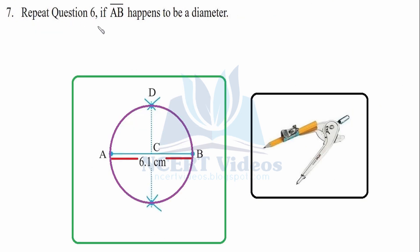Question 7: Repeat question 6, but now line segment AB is a diameter. The only difference is that the chord is now a diameter, which is the longest chord as it passes through the center. Place the compass at B, open slightly greater than the radius, and cut arcs. Do the same from A, get two points, and connect them. This perpendicular bisector of the diameter also crosses through center C.